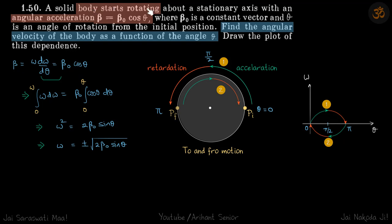A body starts rotating with an angular acceleration beta naught cos theta. We need to find the angular velocity of the body as a function of angle theta. So angular acceleration is a function of theta.